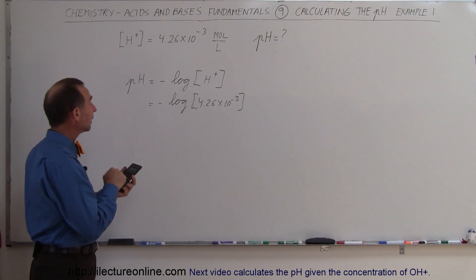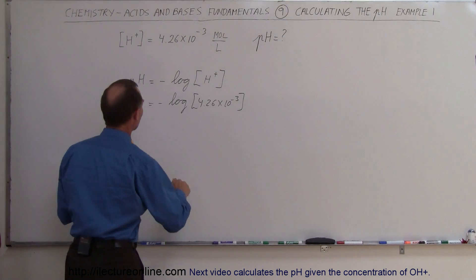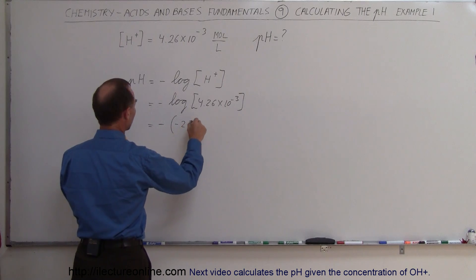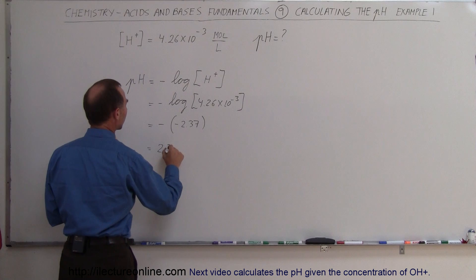Let me write the intermediate result. This equals the negative of minus 2.37, and the negative negates the negative, so this equals 2.37.